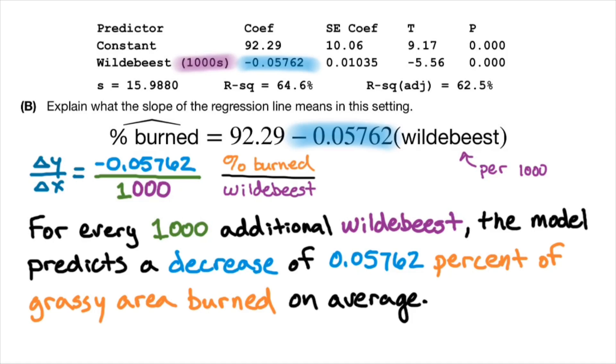There's our interpretation about slope. Before we move on, I need to point out two things. The first of which is the word predicts and on average. I call those words my fudge words or more formally, my non-deterministic words.